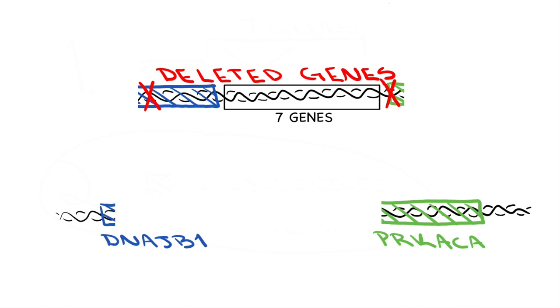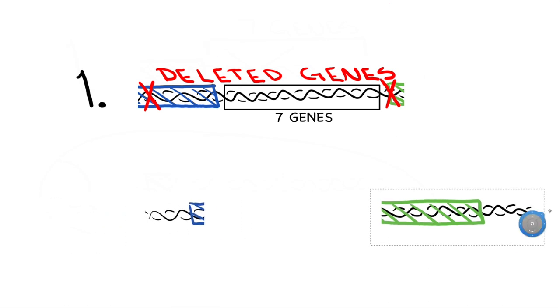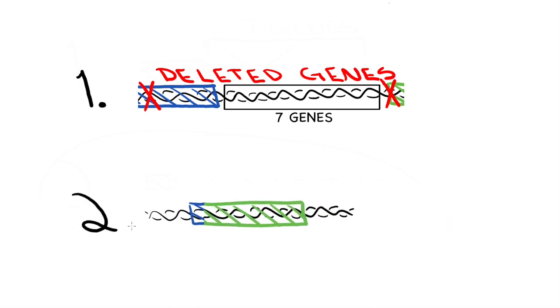The deletion of that piece of DNA has two consequences. The first is that it deletes seven other genes found between those two, and the second is that it creates a new protein that is a fusion of a little bit of DNAJB1 and most of PRKACA. That fusion is called the chimera.